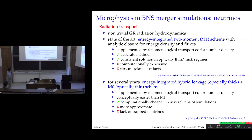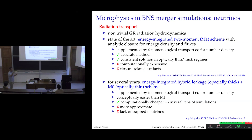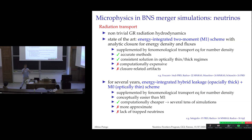Another scheme the community has used extensively is an energy-integrated hybrid scheme: the stiff optically-thick part is treated by a leakage scheme, and then there is an M0 transport in the center. It is computationally and conceptually simpler, but more approximate. I mention this because I will show most of my results using the second scheme, so I wanted to compare the two to give context to my results.